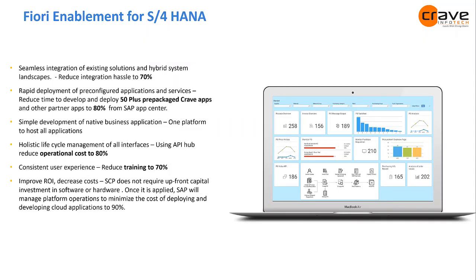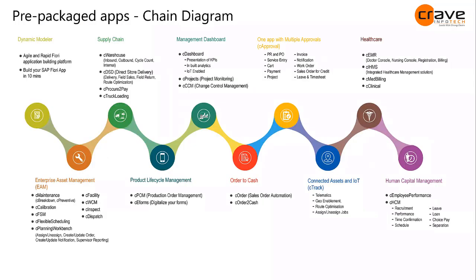Let me talk about our 50 prepackaged solutions — this is our menu. We have enterprise asset management: maintenance, calibration, scheduling, planning workbench, work clearance management. On the supply chain side: warehouse with inbound, outbound, cycle count, and internal processes. On the DSD side: direct delivery, field sales, returns, and route optimization.